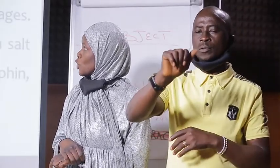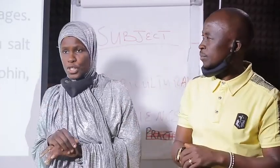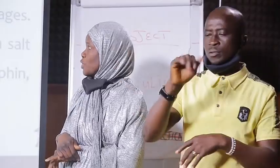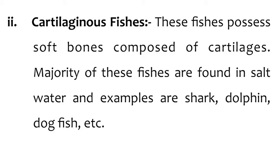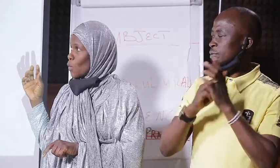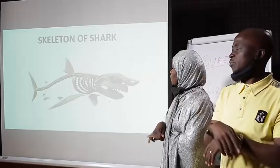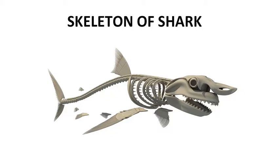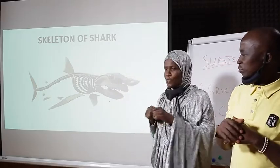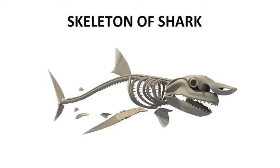The second classification under morphology is cartilaginous fishes. These fishes possess soft bones composed of cartilages. Majority of these fish are found in saltwater. Examples are shark, dolphin, and dogfish. Most cartilaginous fish are saltwater fish. As shown in the diagram of a shark skeleton, it doesn't have bone but has cartilage. These cartilages are very soft — not as strong as bones.